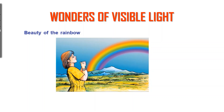Let us explain the formation of a rainbow. Sunlight is white light consisting of seven constant colors — VIBGYOR. When white light passes through a water droplet, due to refraction, each color deviates in a different manner. This is dispersion. When light passes through the water droplet, it undergoes dispersion, and white light splits into its constant colors. We can see these constant colors in the form of a rainbow.